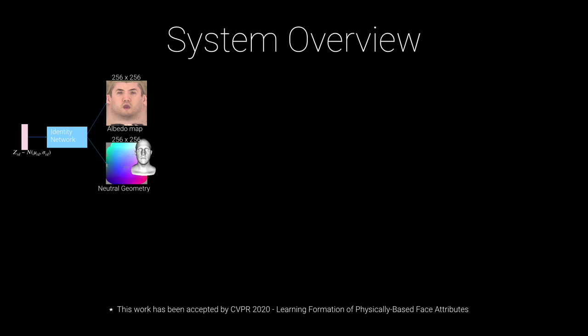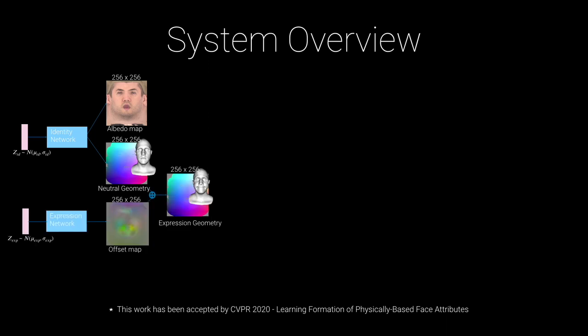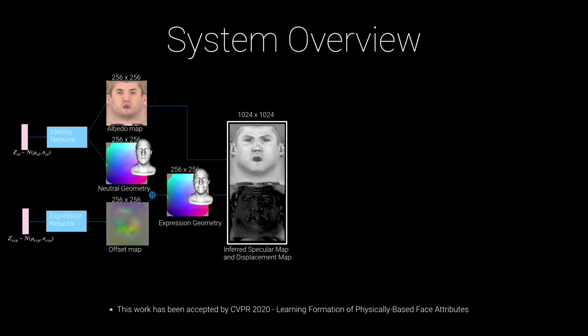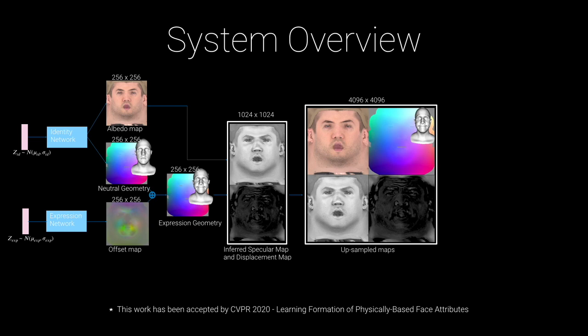Our system is a cascaded network that includes four sub-networks: an identity network, an expression network, a specular displacement map inference network, and an up-resolution network. The identity network first generates a neutral identity with albedo by providing a vector in latent space, followed by an expression offset map generated by the expression network. By adding the offset map to the generated geometry map, we get the same person with a different expression. We then concatenate the albedo and geometry map as input to an image-to-image translation network, which generates specular and displacement maps. Finally, all maps are sent to a super-resolution network, upscaled to 4K — the original resolution of LightStage data.